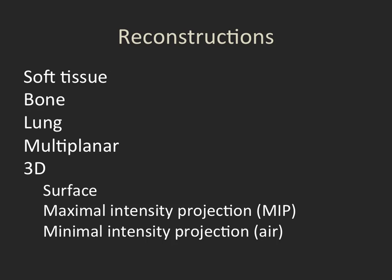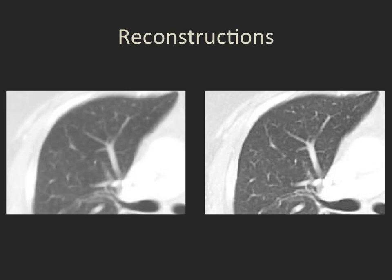Studies can also be reconstructed into different slice thicknesses. We may want very thin slices to look at the lung parenchyma or the temporal bone, and thicker slices for a study looking generally through the abdomen. Here are two slices of a patient's CT scan where the technologist has taken the raw image data and applied two different software algorithms to reconstruct the slices through the thorax.